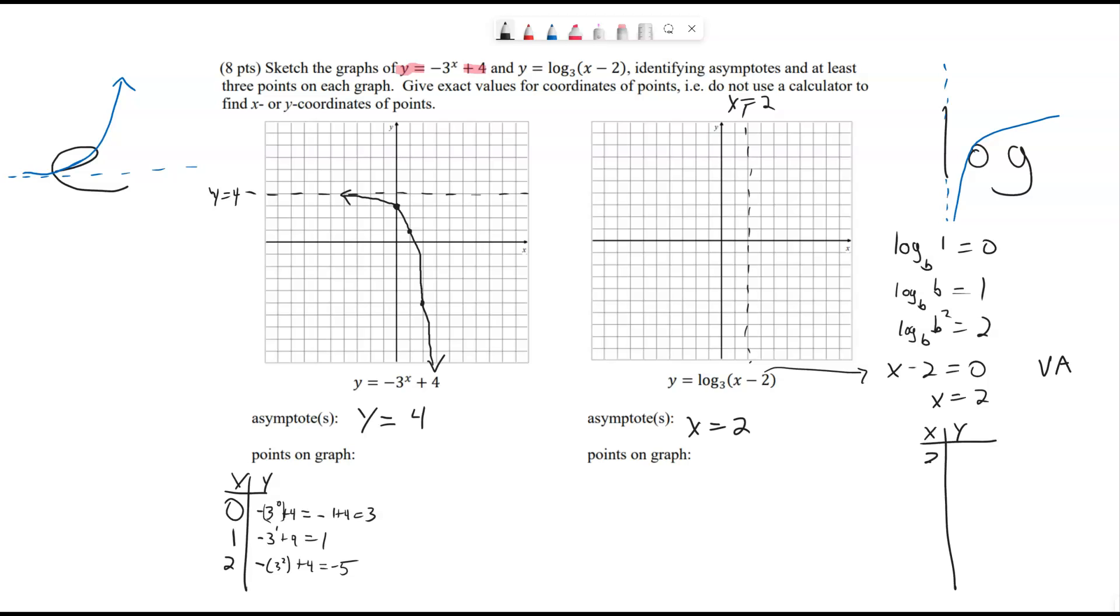If I put in 3, then I get log base 3 of 3 minus 2 is 1. That's 0. There's a nice point. 3 comma 0. If I put in 5, then I get log base 3 of 5 minus 2 is 3. That's a nice one. That's 1. So 5 comma 1.